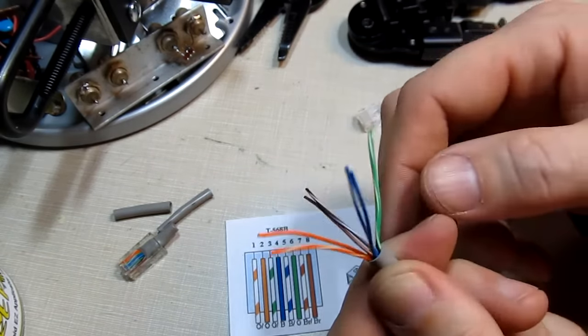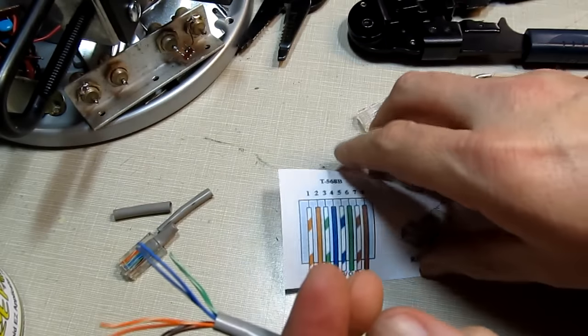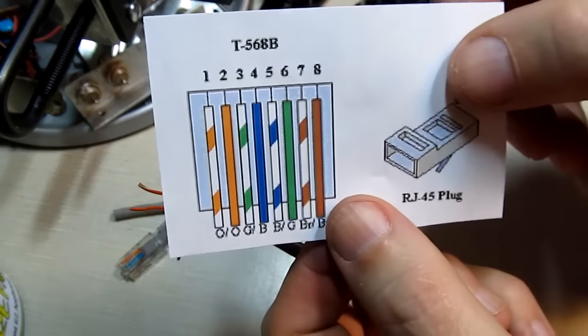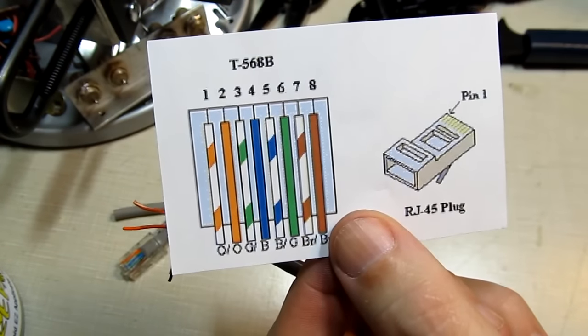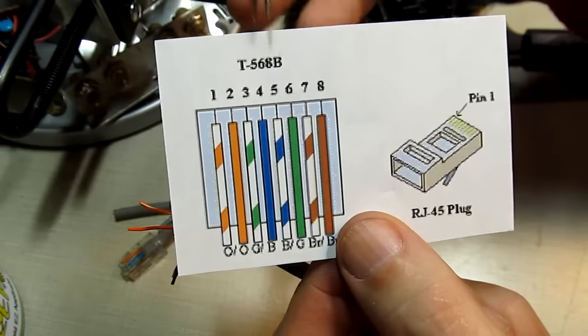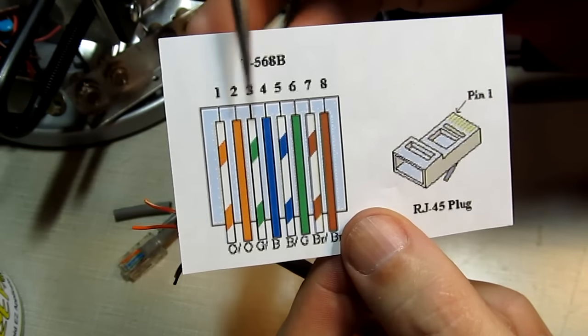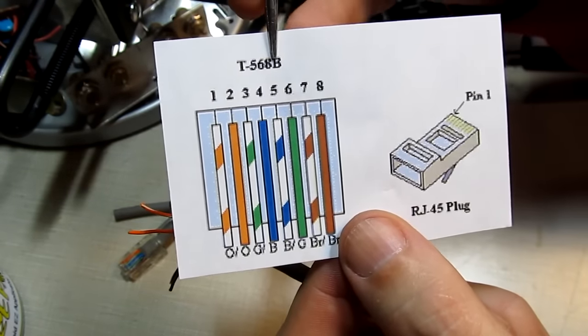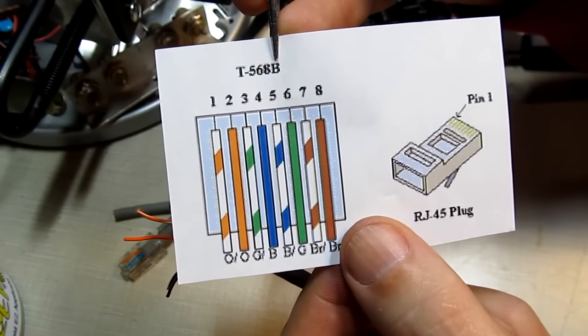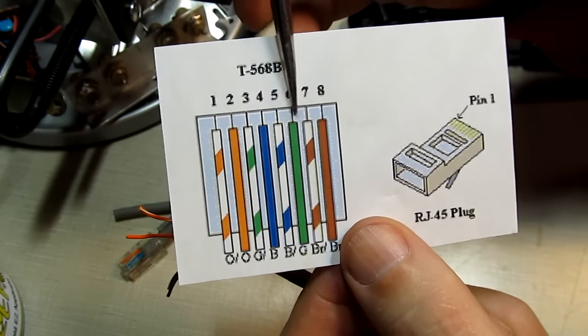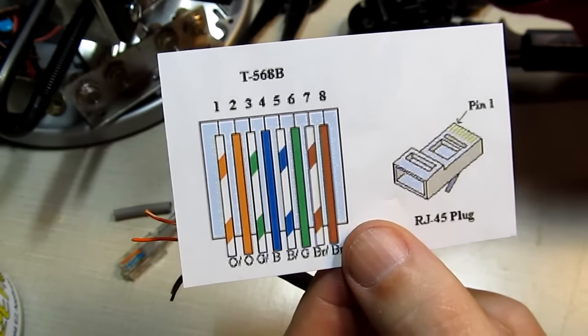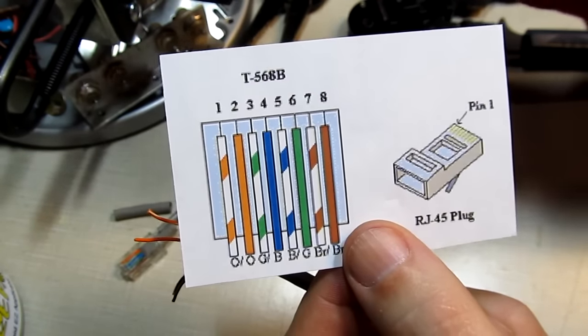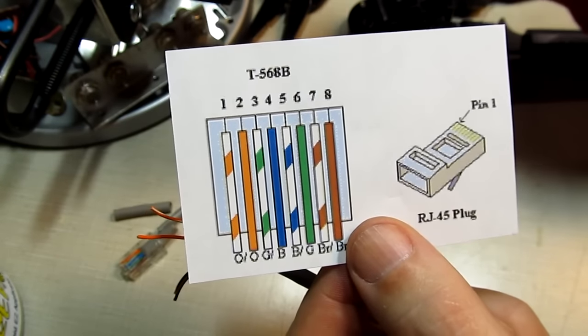So to put them in the right order I'll typically keep a little cheat sheet like this around. This is the TIA T-568B wiring order and this is how I do all my patch cables. There's also an A suffix that's available and the only difference is that the green pair and the orange pair are swapped. But as long as you make both ends of the wire the same they'll both work fine.